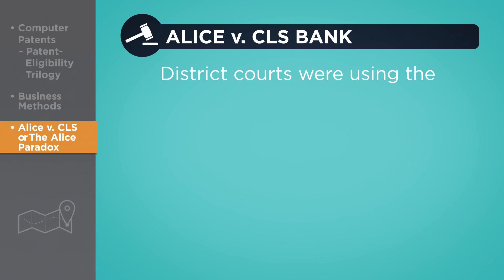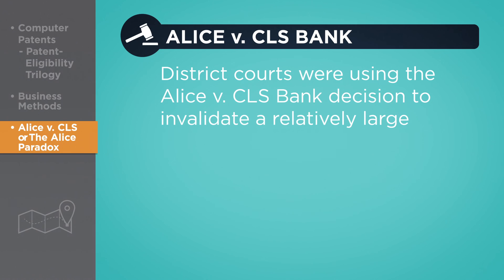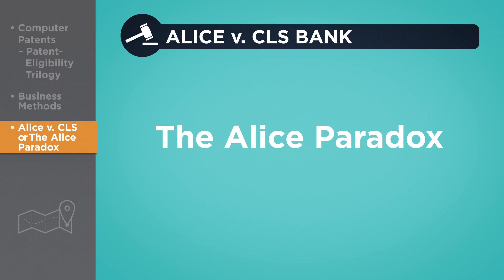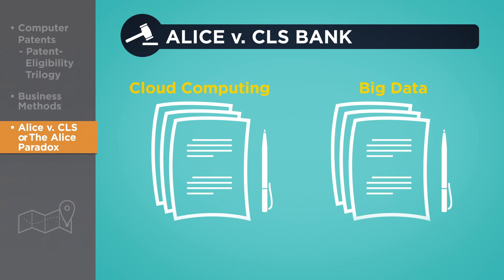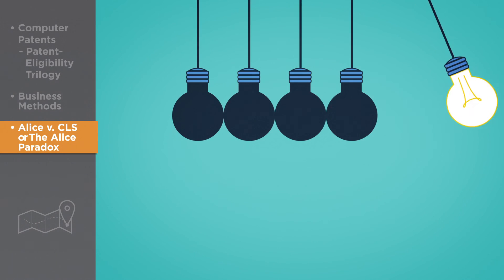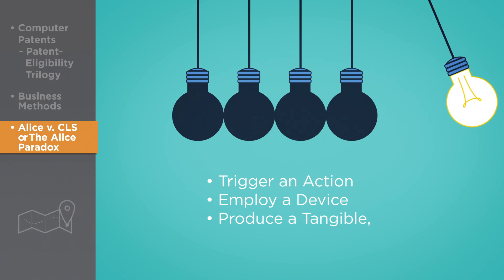It soon became clear that district courts were using the Alice v. CLS Bank decision to invalidate a relatively large number of software patents. This trend has become known as the Alice Paradox, as these often involve the highest value-added products and services involving cloud computing, big data, and other new technologies, posing a challenge for many corporate innovation departments. To be patentable nowadays, software has to take a genuinely inventive step and either trigger an action, employ a device, or otherwise produce a tangible, transformative result.